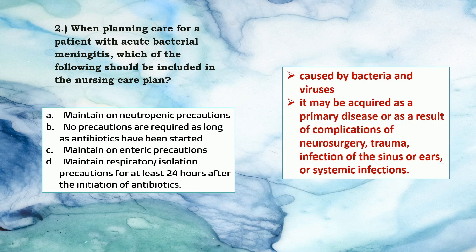Meningitis is an infectious process of the central nervous system caused by bacteria and viruses. It may be acquired as a primary disease or as a result of complications of neurosurgery, trauma, infection of the sinus or ears, or systemic infections.